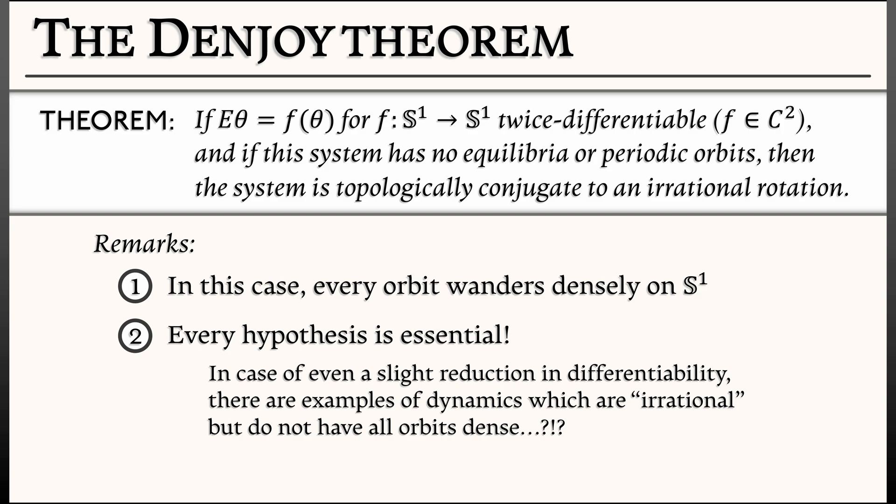And every hypothesis in the Denjoy theorem is critical. Now speaking of smoothness, you might say, well sure f is smooth, but what about the topological conjugacy, this homeomorphism φ? Does that have a first derivative, a second derivative? Must it be smooth?